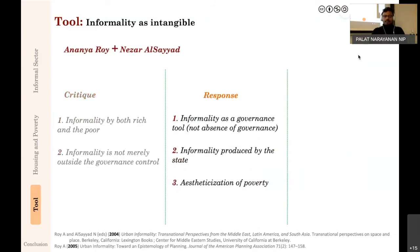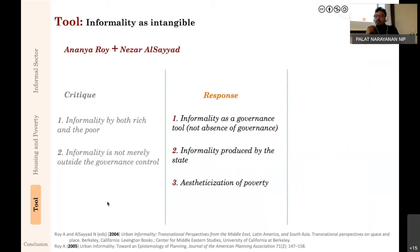Roy and AlSayyad's response: informality is a governance tool, not an absence of governance. To give an example drawing from previous discussion—why does a slum exist? Because people are poor. Why are people poor? Because the economic structure does not allow them to accrue money for proper housing. The government did not simply pull out; it relegated its role as housing provider to the people so they would self-build. Informality is produced by the state.